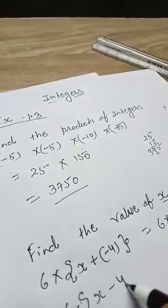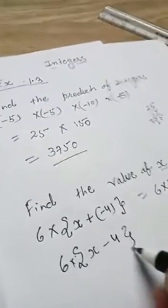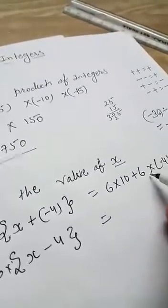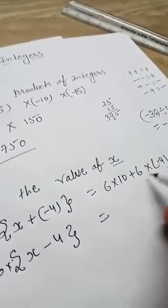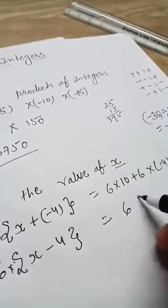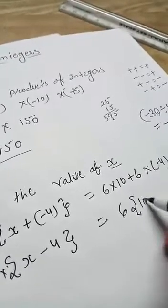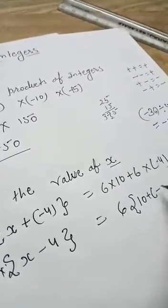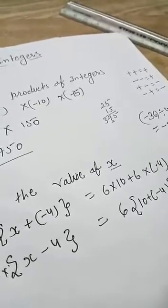Both sides have 6, so take common factor. In bracket: 10 plus minus 4, close the bracket.